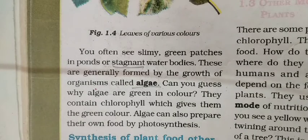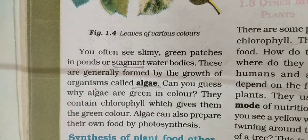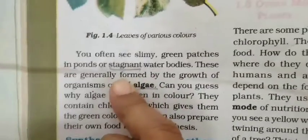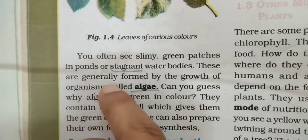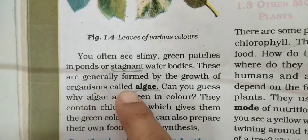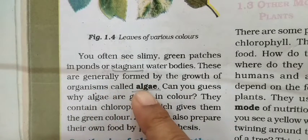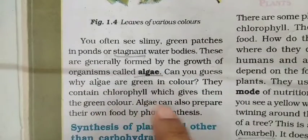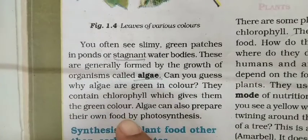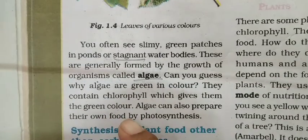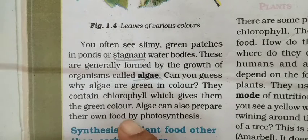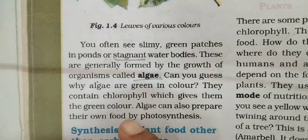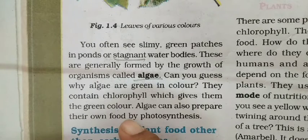You often see slimy green patches in ponds or stagnant water bodies. These are generally formed by the growth of organisms called algae, and they contain chlorophyll which gives them the green color. Algae can also prepare their own food by photosynthesis. Algae are normally green in color, though you can find a little variation, and they are found mostly in still water bodies.